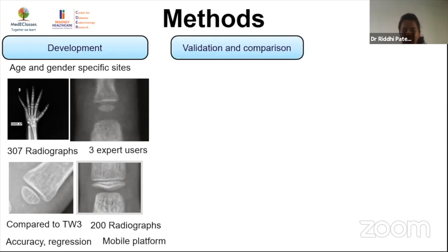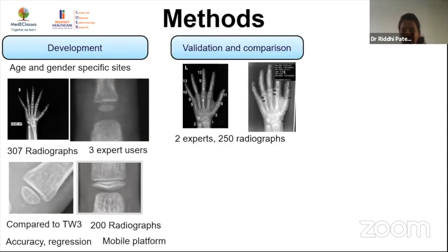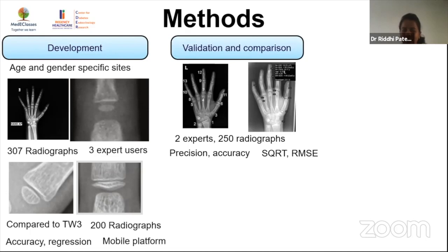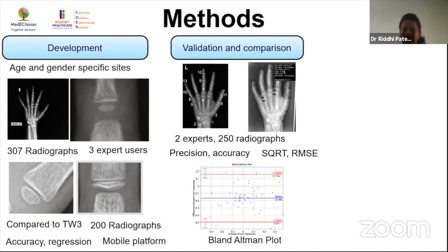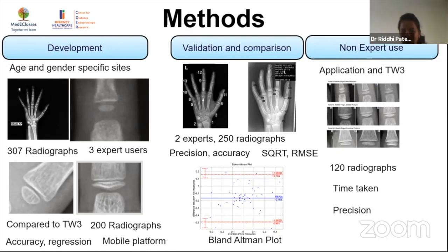Initially, thirteen sites recommended by Tanner-Whitehouse 3 were selected. From these, the top five sites were identified by regression analysis using 200 radiographs. These five sites were then loaded onto a mobile platform and validated against Tanner-Whitehouse 3 by two expert users using 250 radiographs. Precision, accuracy, and time of assessment were calculated using standard statistical parameters.